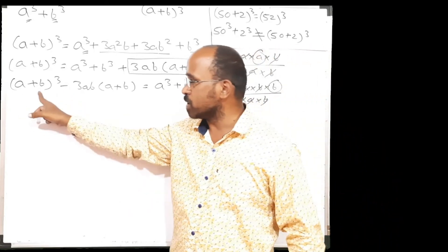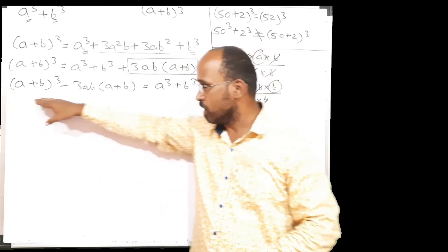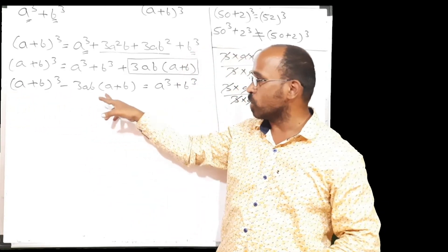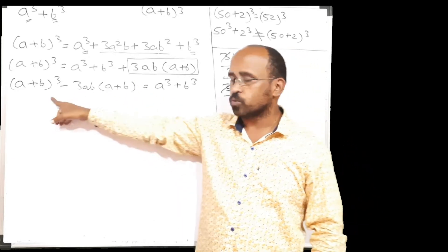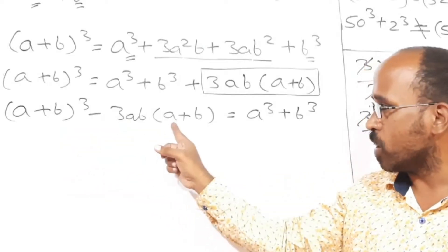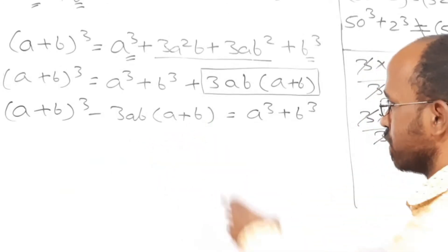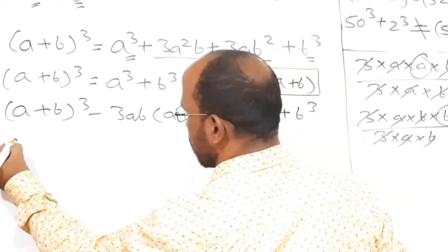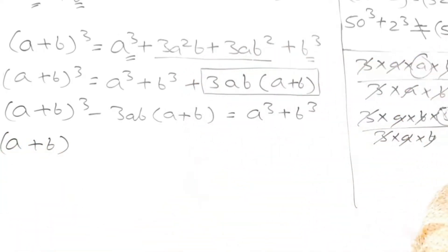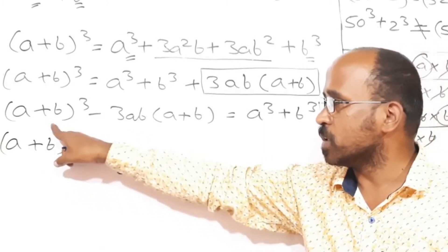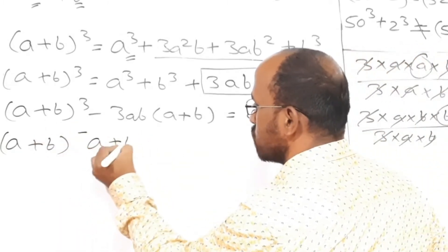First term is a plus b bracket cube — one term enclosed within the bracket. Second term: minus 3ab into a plus b, this total one monomial, one term. So among these two, can we find out a plus b common? Yes, a plus b is common between these two terms. So let's take a plus b common out of the bracket. Now if we will divide this a plus b cube by a plus b, it will be nothing but a plus b square.